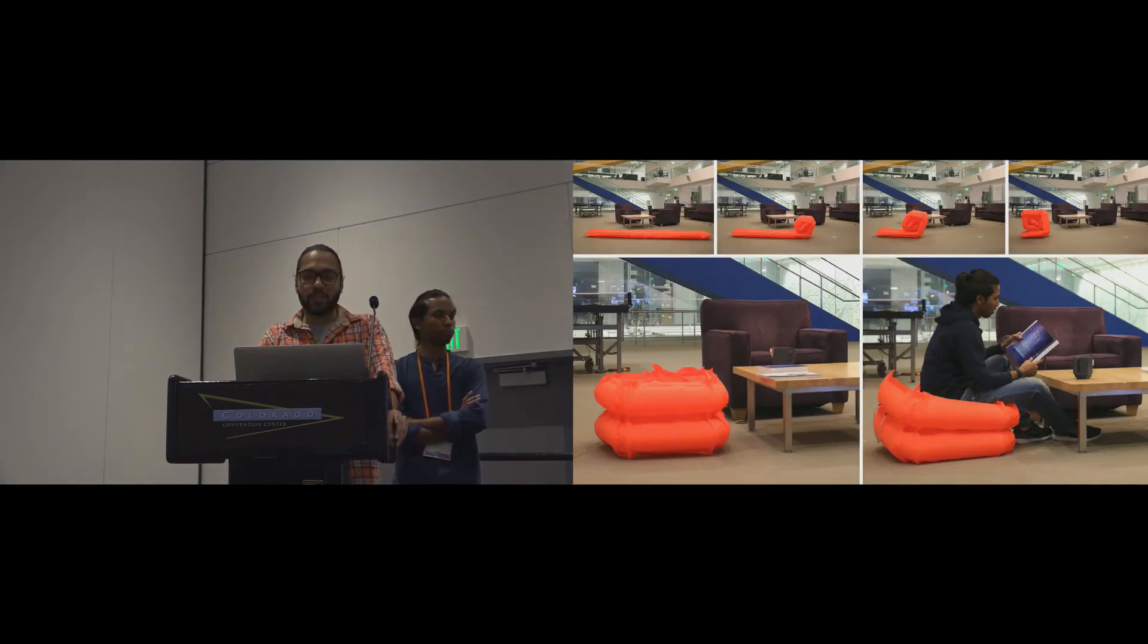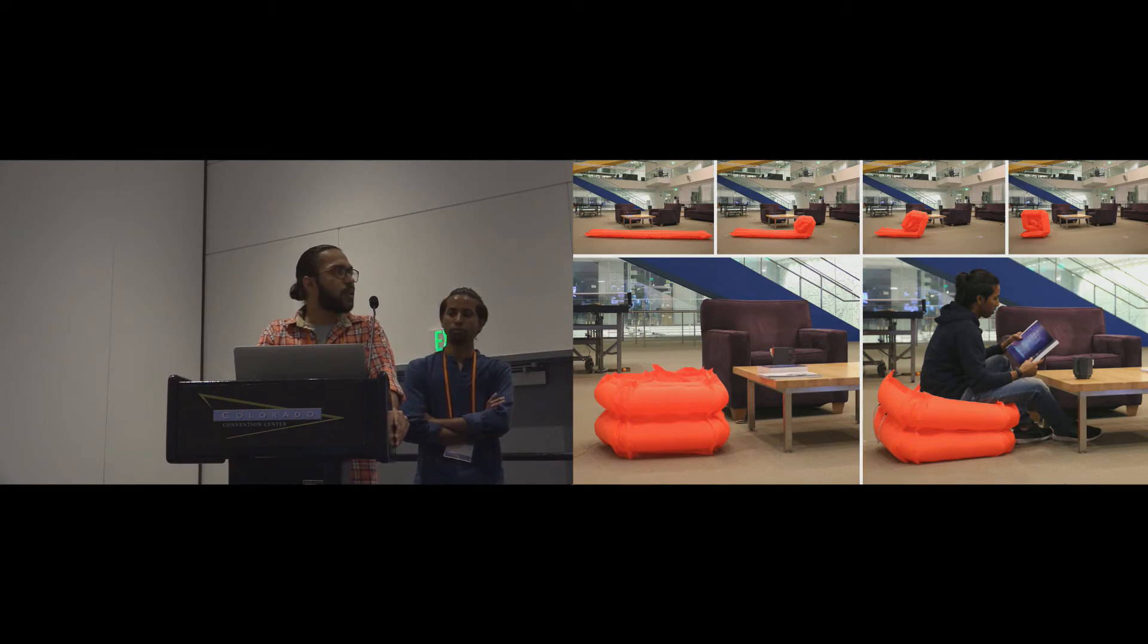The flat fabricated object consists of a number of mountain actuators, each folding to 90 degrees. Upon inflation, the objects transform to a chair which can bear the load of a person. And we noticed different inflation pressures give it different form factors. Example, turning it to a couch when less inflated.